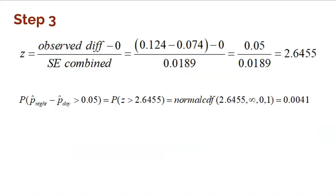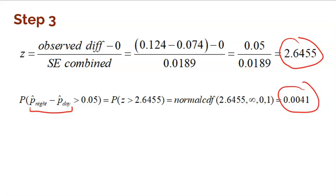Z-score time. The Z-score is the observed difference of 0.05 minus the assumed mean of zero, divided by the standard error of 0.0189. That is a pretty high Z-score: 2.6455. Now I need to find the p-value — the probability that any other sample difference is more extreme than mine, meaning a Z-score greater than 2.6455. Using normal CDF, I get 0.0041. That's pretty low.